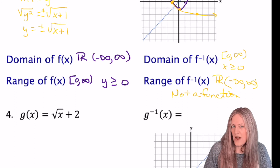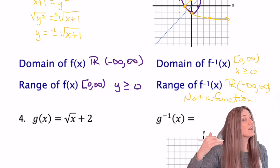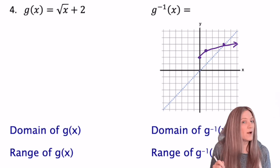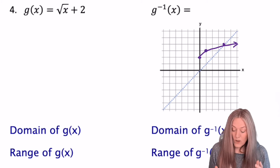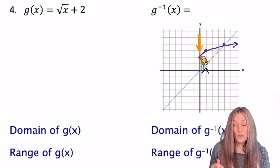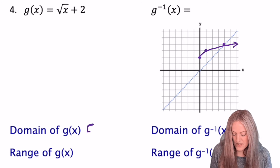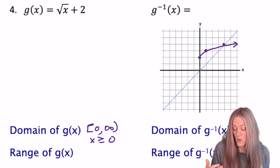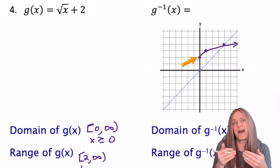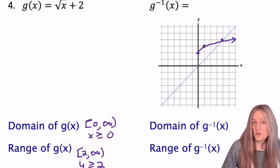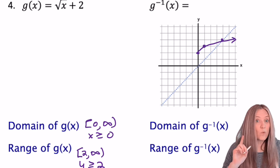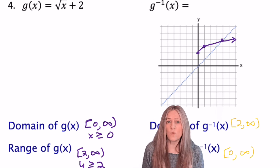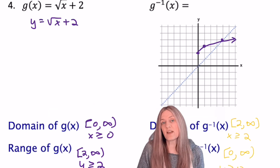The next example is the square root of x plus two — our square root function translated up two units. The pattern points from the endpoint: over one up one, over four up two. The domain: the first time I see the graph is when x is zero, so the domain is zero to infinity, or x is greater than or equal to zero. The range: walking up the y-axis, as soon as I get to two — so the range starts at two. Do I need to graph the inverse to know its domain and range? No. Remember, if you're writing it in inequality form, you have to change the x's and y's.